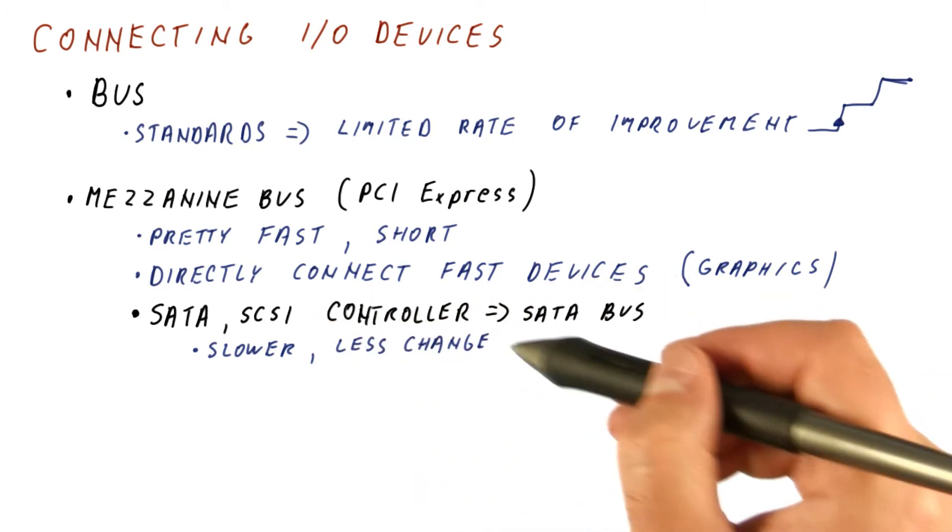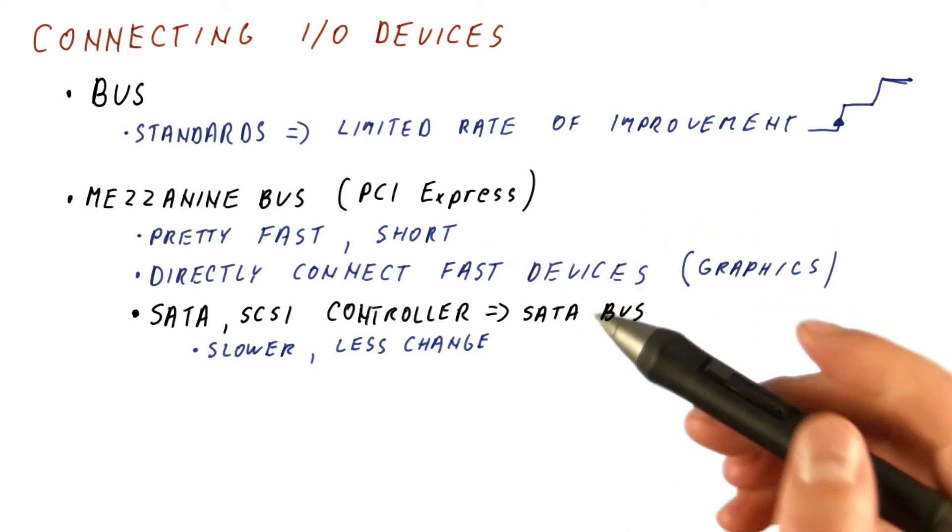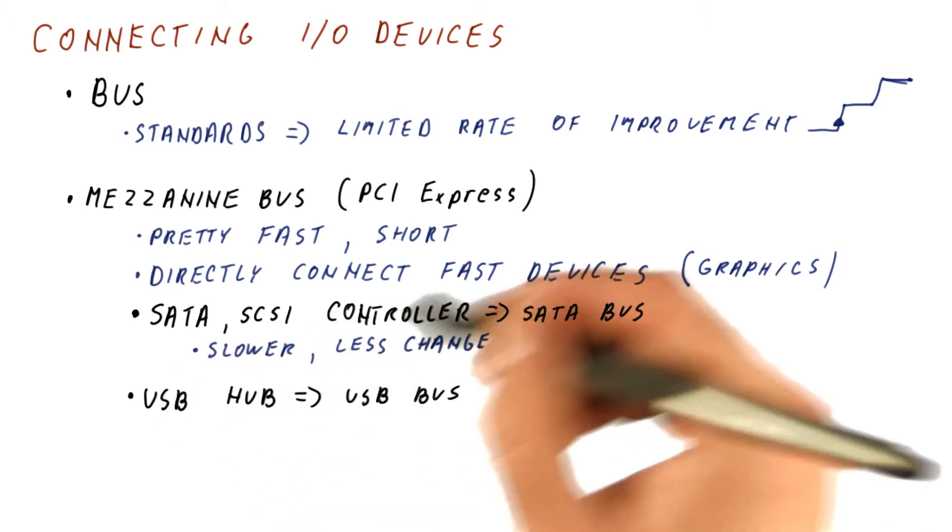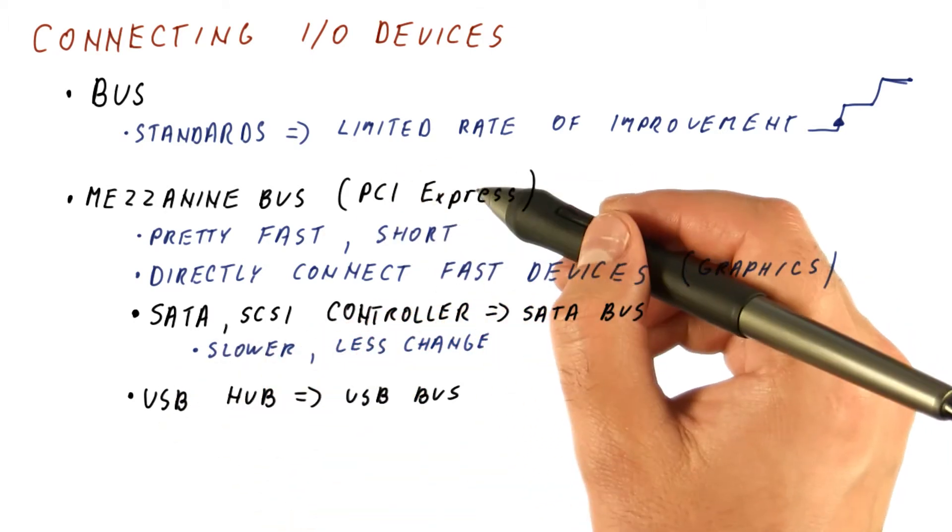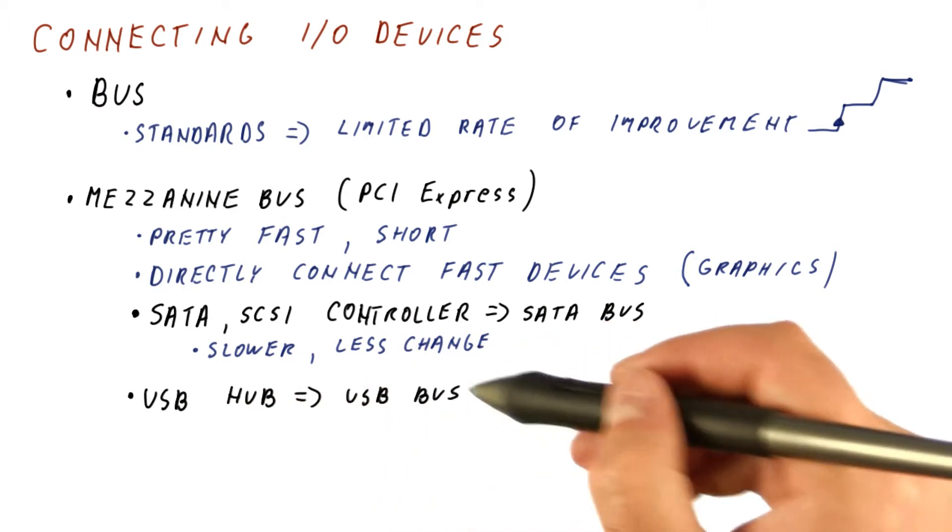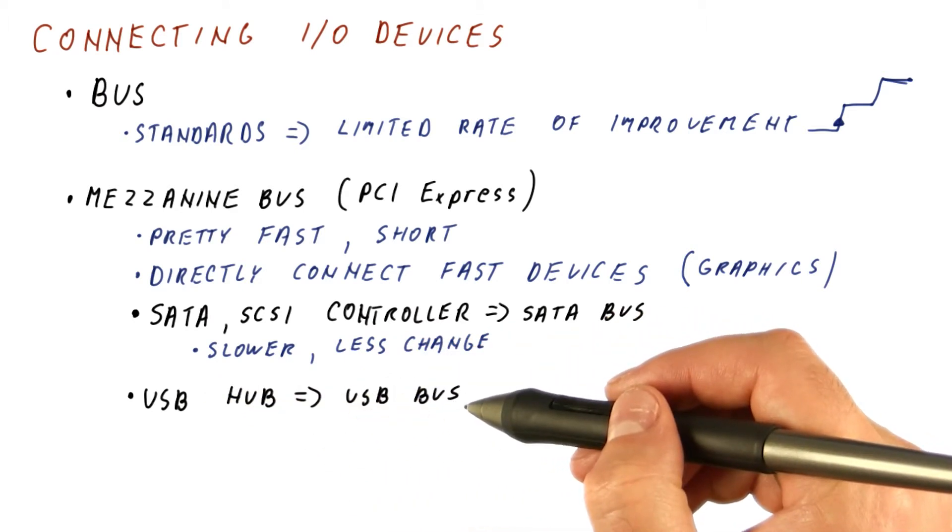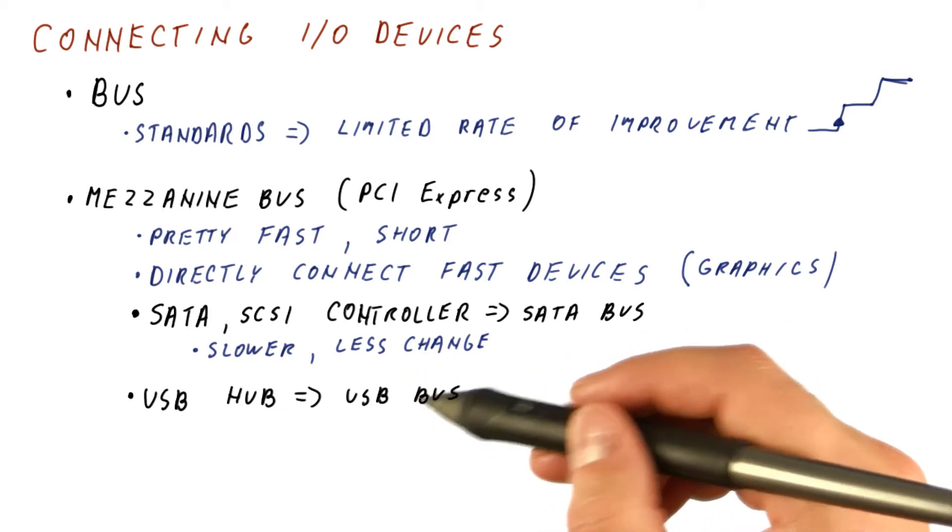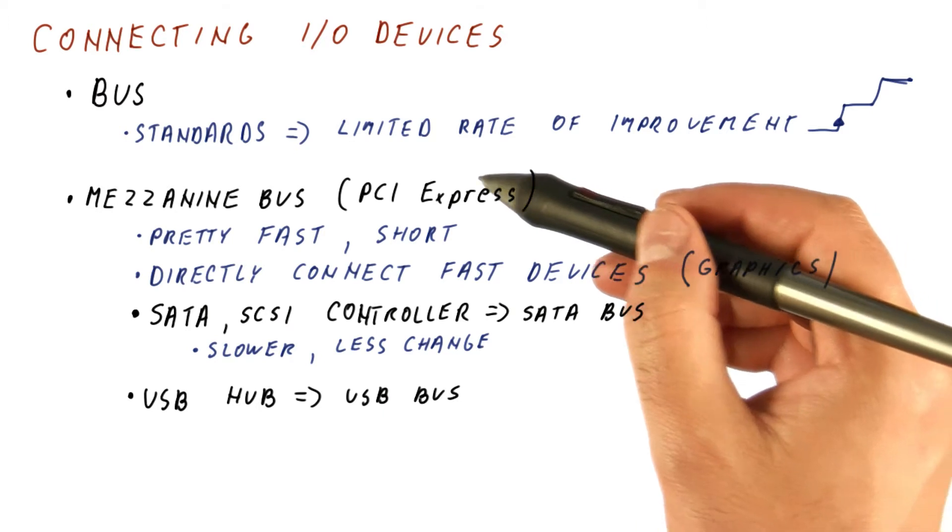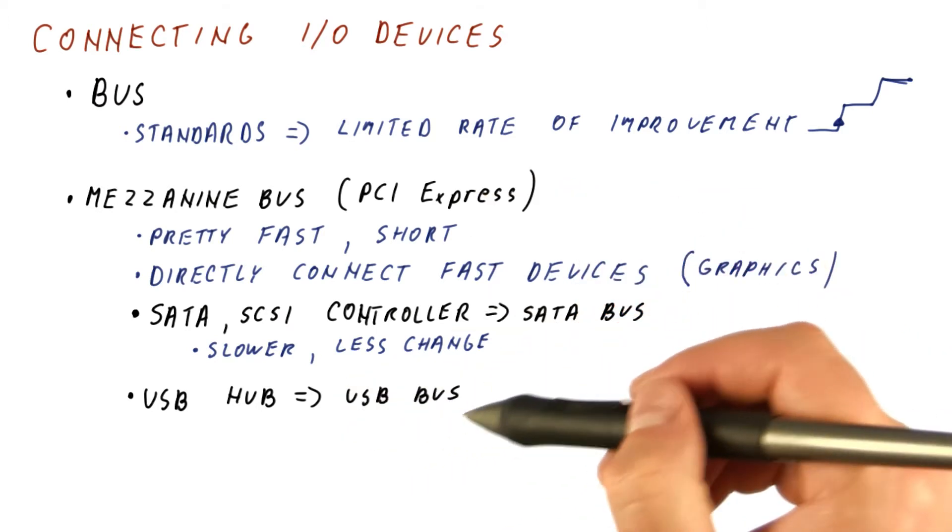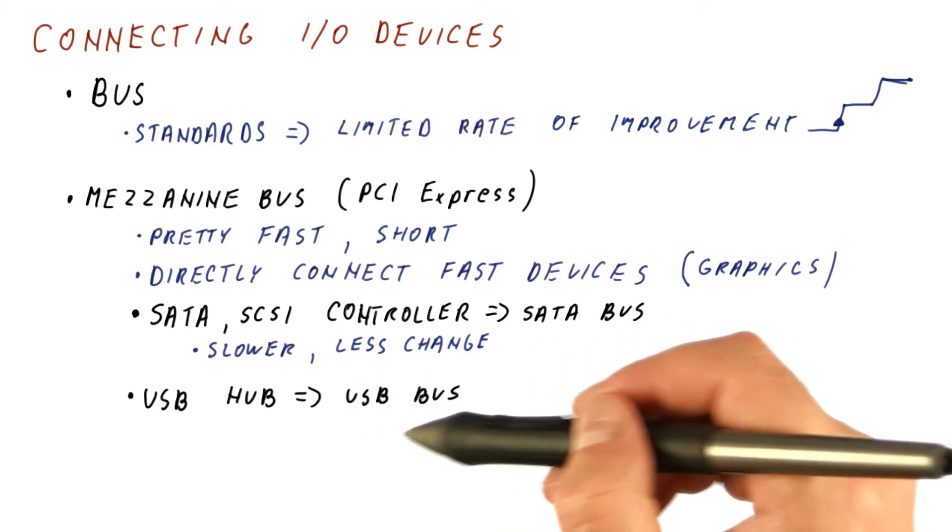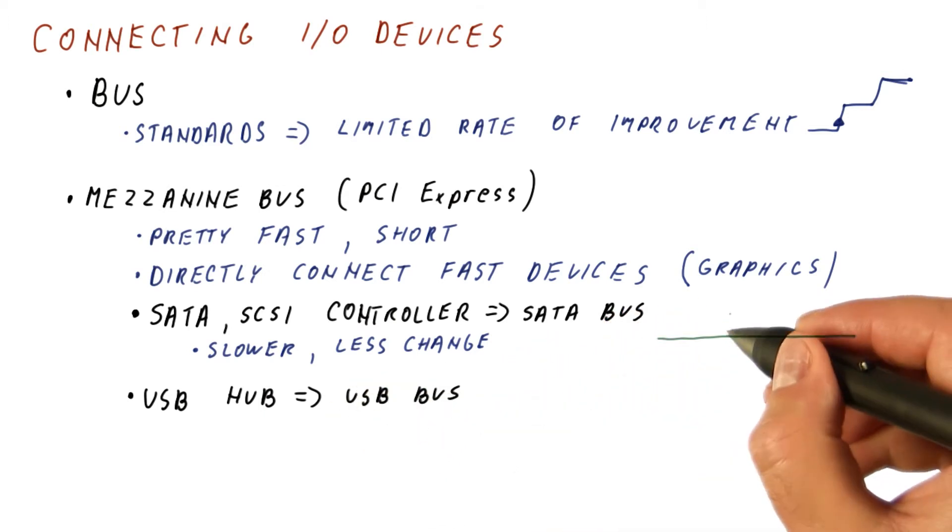We can also have a USB hub attached to a PCI Express bus. The USB hub itself provides a USB bus connection for USB devices that are even slower than SATA. But again, their standard lives for a lot longer, so we can use many different devices relatively cheaply and connect them to this.